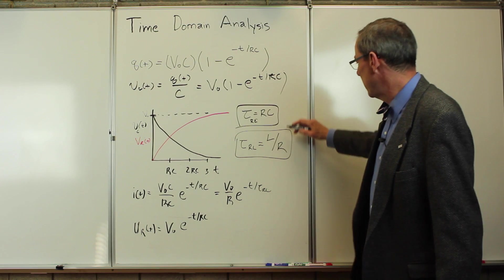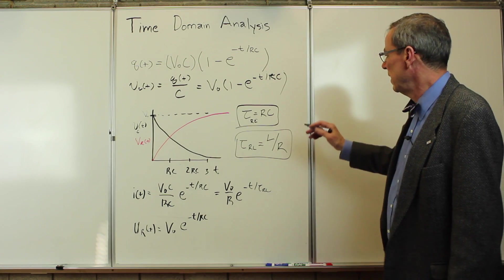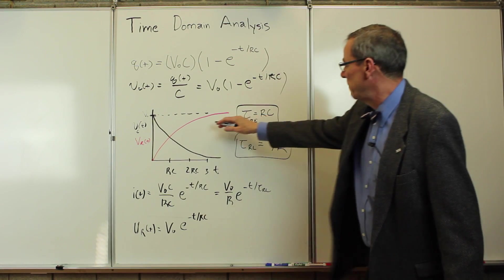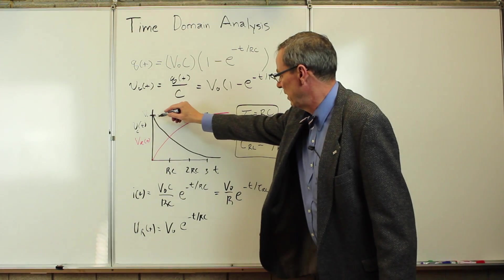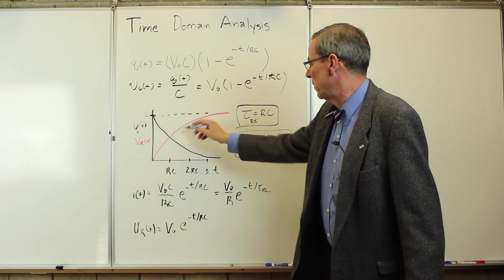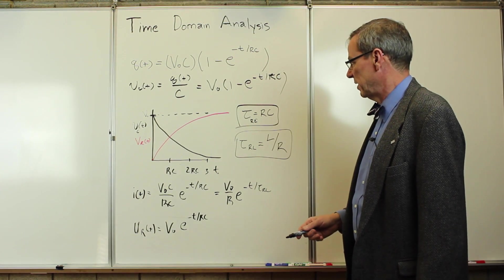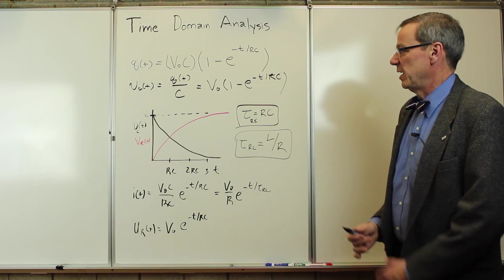So we have these two characteristic times here, R and C for an RC circuit, tau_RL for an LR circuit. And those are interesting. They basically control the rate at which this exponential changes. How long it takes to fall to one-third of its value or rise to one-third of its final value. It's given by this characteristic time. So they're just convenient to talk about things. So there's time domain analysis.